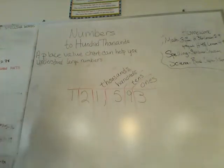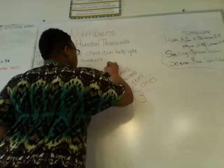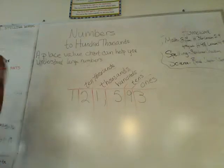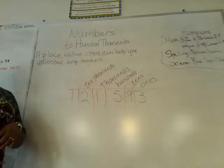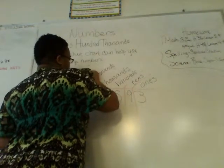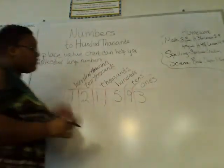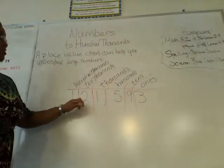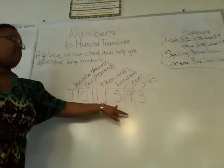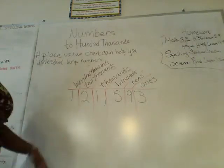What's next? Ashoki — thousands, thousands. Good. Timothy, what do we have next? The two — ten thousands. And what do we have left? Hundred thousands — good job. So we have one hundred twenty-one thousand, five hundred ninety-three. This gives us an idea of how that number can be broken down.